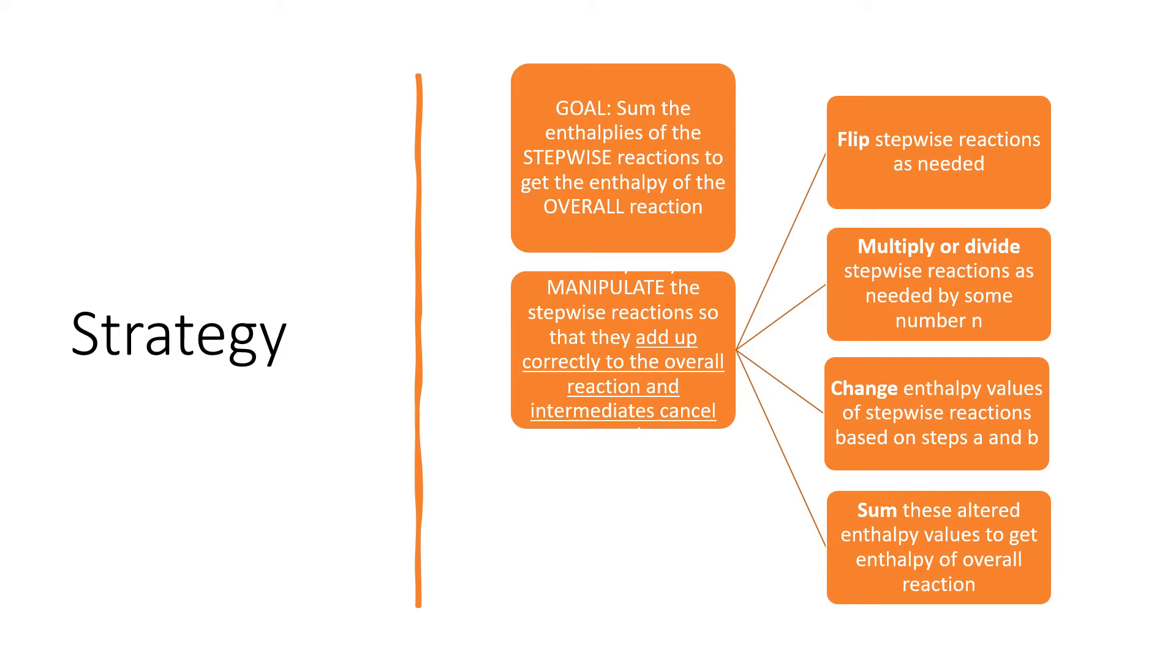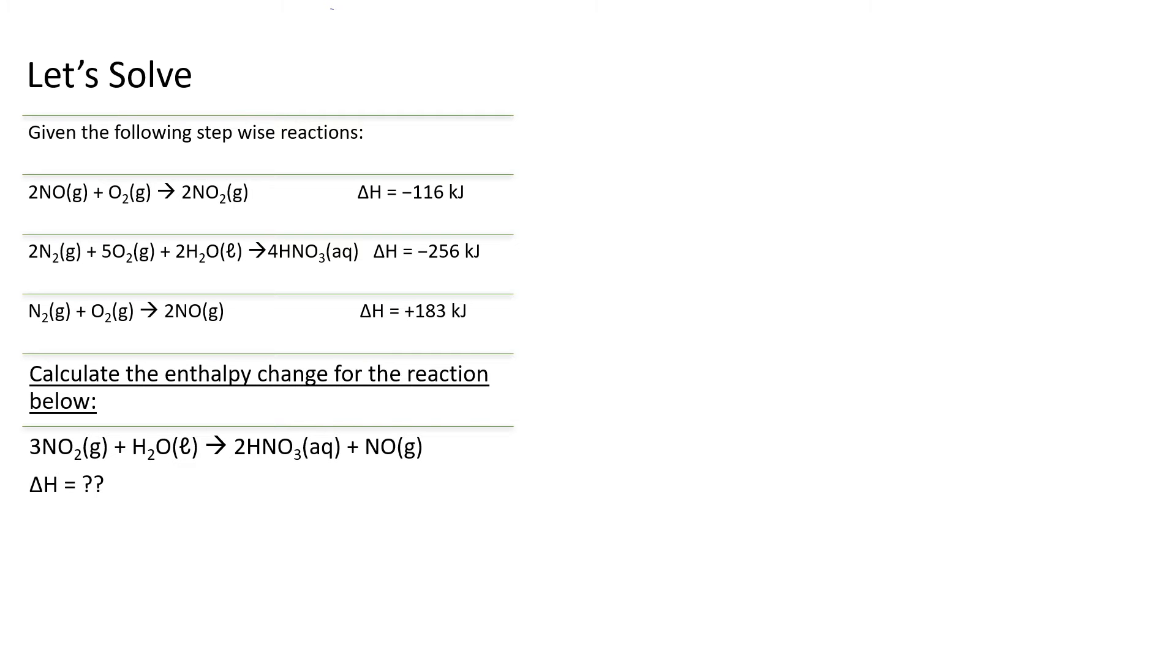Once we have changed our enthalpy values appropriately and made sure that our individual reactions do, in fact, sum to the overall reaction, we can then sum these altered enthalpy values and get the enthalpy of the overall reaction. So we're going to go through our stepwise reactions one by one here and figure out how do we need to manipulate these.